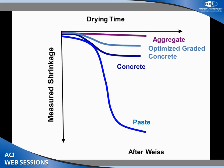For graphical learners out there, if we show drying time on the x-axis and shrinkage on the y-axis — if I made things out of paste, like cement driveways, they would shrink to death and crack themselves up. We need to add aggregate. And if we just had aggregate driveways, they wouldn't shrink but they sure wouldn't hold together. Concrete is a composite material — a mixture of aggregate and paste — so it shrinks less. By making optimized graded concrete, we jam more aggregate in and decrease shrinkage and hence decrease cracking.